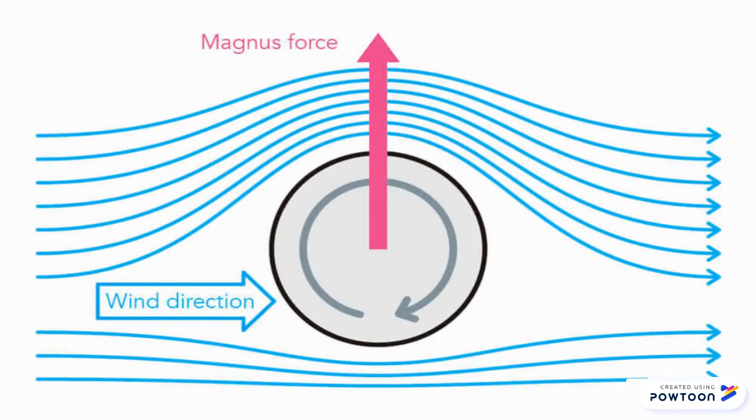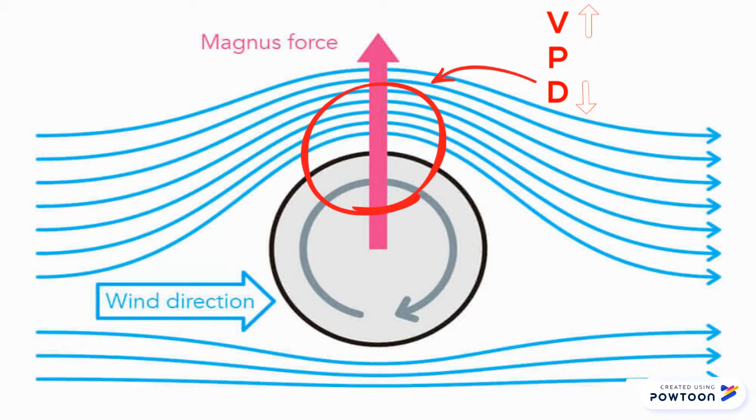As we can see in this picture, the fluid flow is in the same direction as the rotation of the cylinder in the upper side. Therefore, there is a minimum amount of drag and its speed is greater. And taking into consideration the Bernoulli theorem, when the speed increases, the pressure decreases.